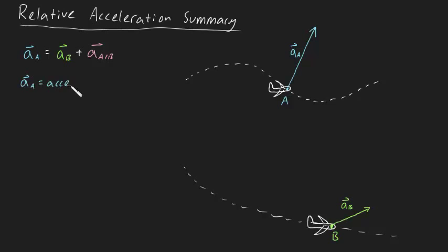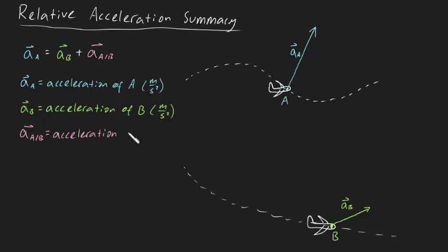Where AA is the acceleration of A in meters per second squared, AB is the acceleration of B in meters per second squared, and AA slash B is the acceleration of A relative to B, also in meters per second squared.